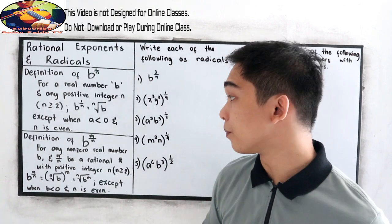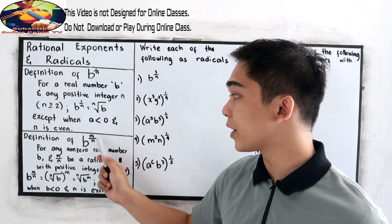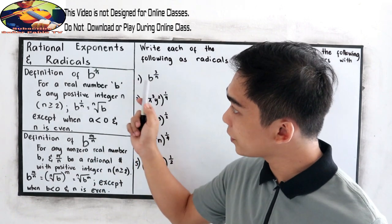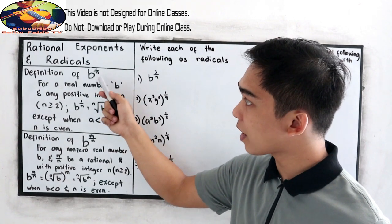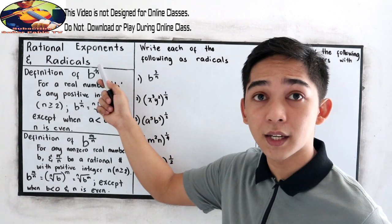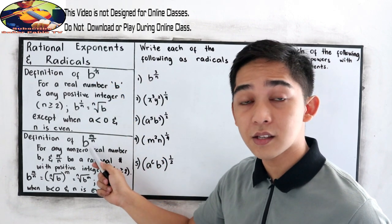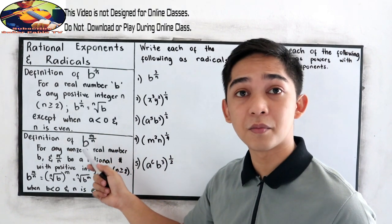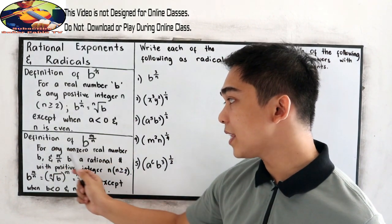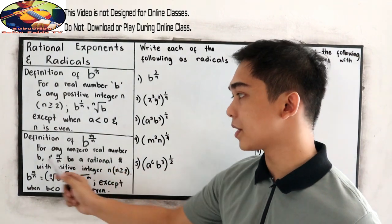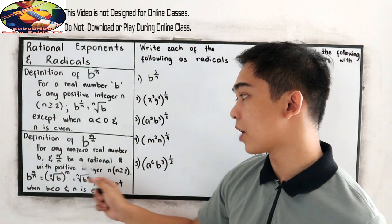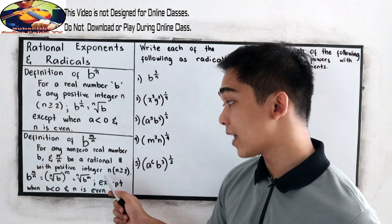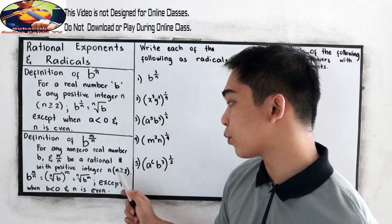Second definition of B raised to M over N. The difference between the two is in our first definition, our numerator is 1. In this case, our numerator is any real number. So for any non-zero real number B, M over N be a rational number with positive integer N. N, again, must be greater than or equal to 2.